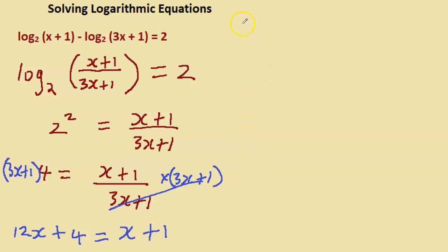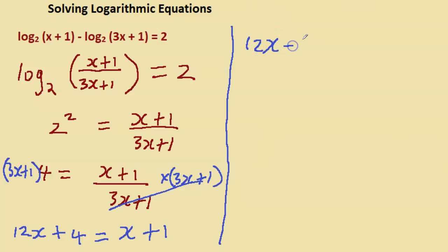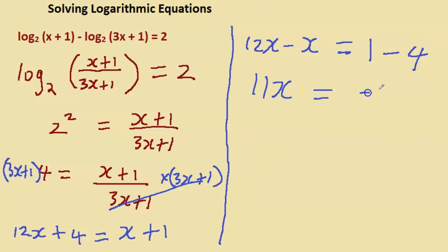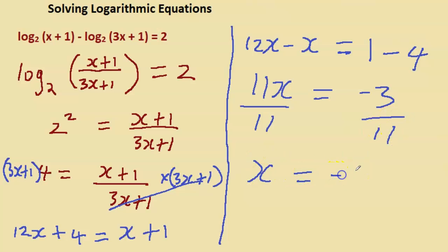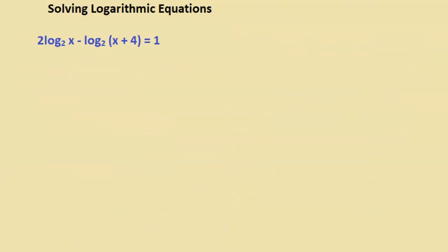Grouping like terms: 12x minus x is 11x, and 1 minus 4 is negative 3. Dividing both sides by 11, x equals minus 3 over 11.